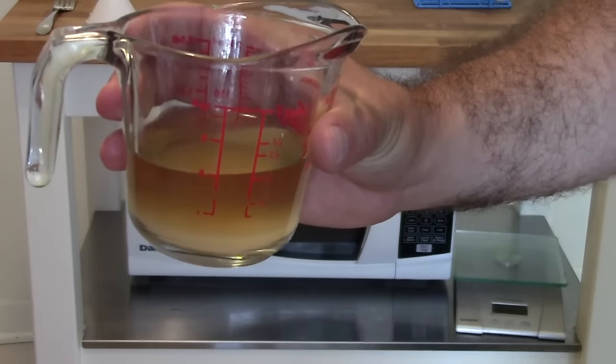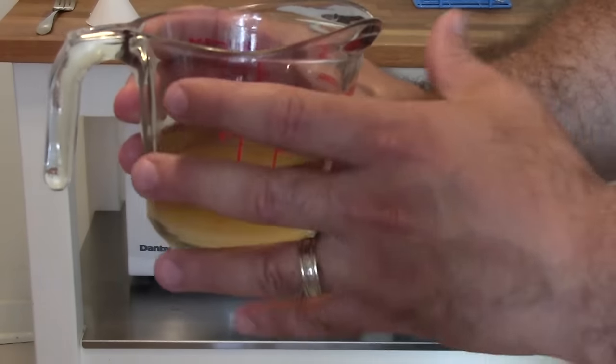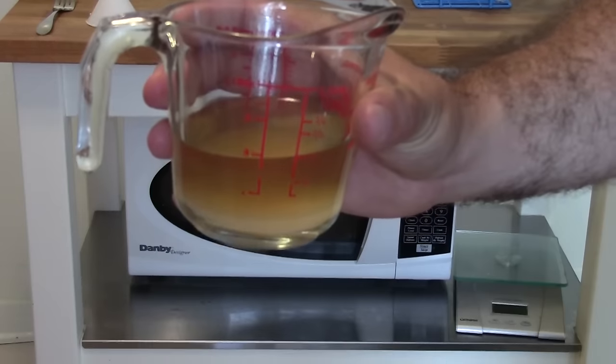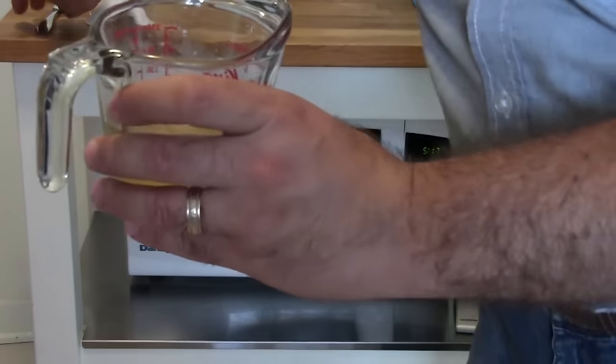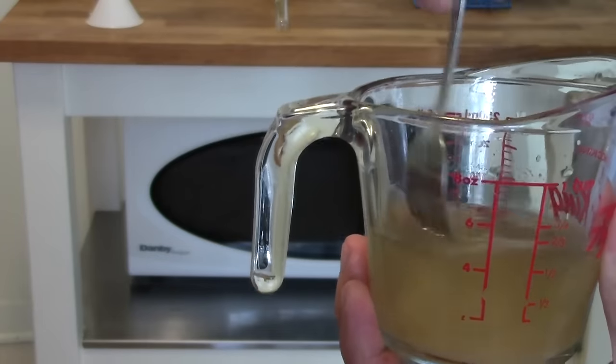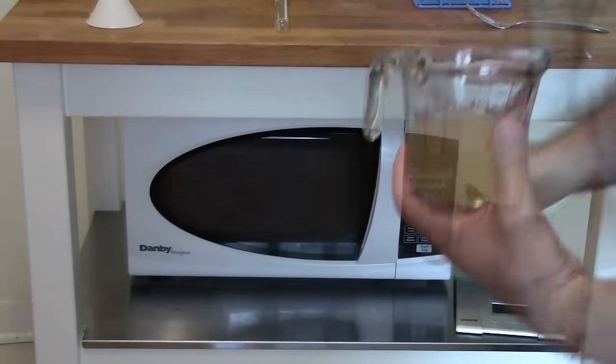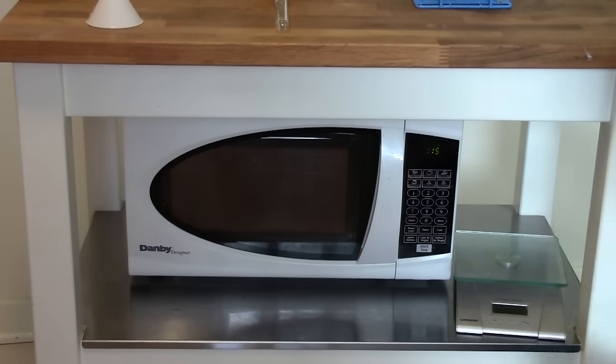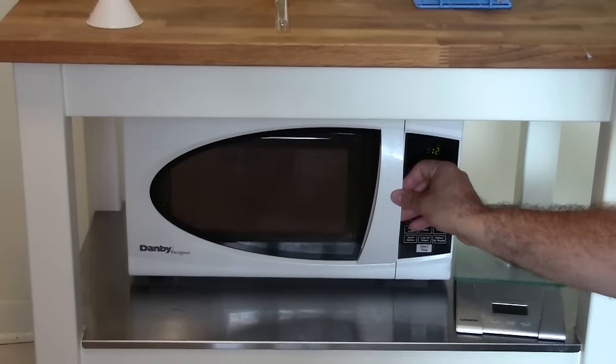So the first thing we're going to want to do is dissolve the agar into our media so it's all ready to go. Now we don't need to boil this extensively. We're not trying to sterilize the media or anything like that. We just want to dissolve the agar. So an easy way to do this is to stir it up and then just pop it in the microwave for a couple of seconds. Now I don't think you can see this on the camera, but basically what I'm doing is I'm trying to look into the microwave and the second I see any sign of boiling, I'm going to stop the microwave, bring my measuring cup out and give it a stir. I'd also recommend doing it every 20 or so seconds otherwise that agar may settle and give you a solid layer at the bottom.